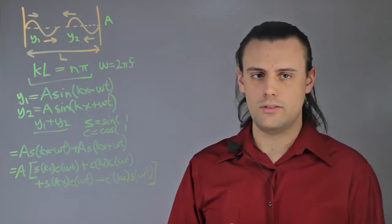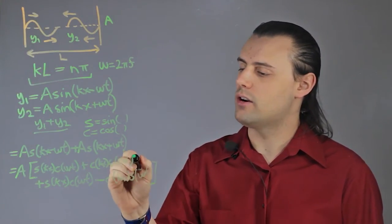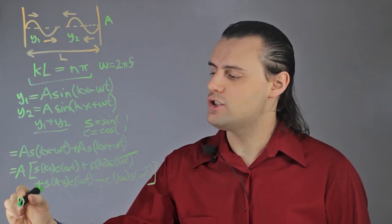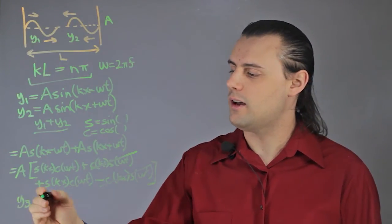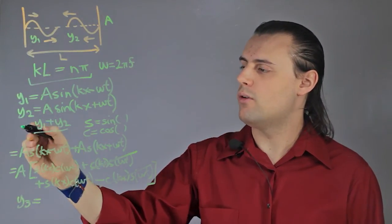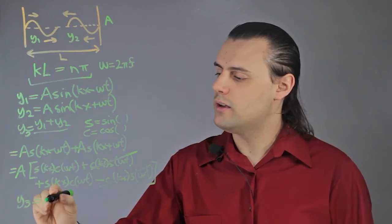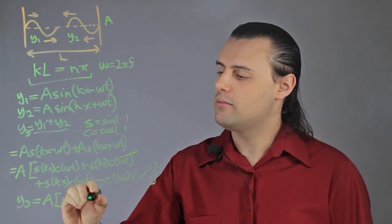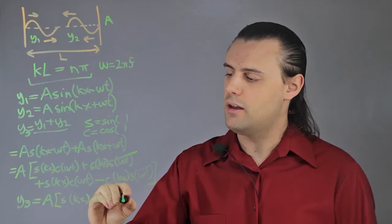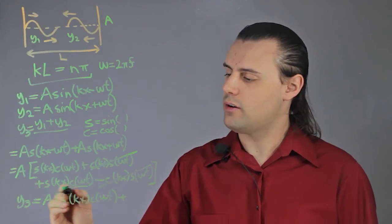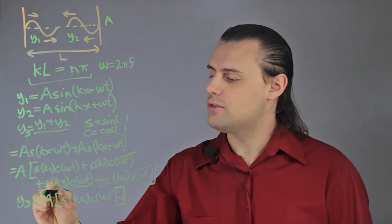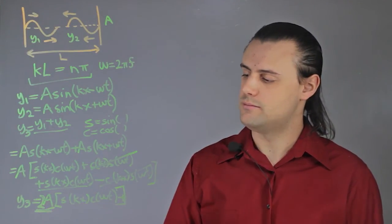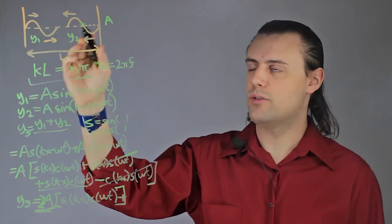Now if I compare these four terms, I see that two of them will cancel out with each other, namely the second and fourth term. So I'm left with a mathematical function that describes the resulting wave in space and time. y₃, which is equal to y₁ plus y₂, is going to be equal to A times sin(kx)cos(ωt) plus this term again. So I can just write a 2 in front. So I see that if they're in phase, the amplitude will double, and that will be the shape of the resulting wave.